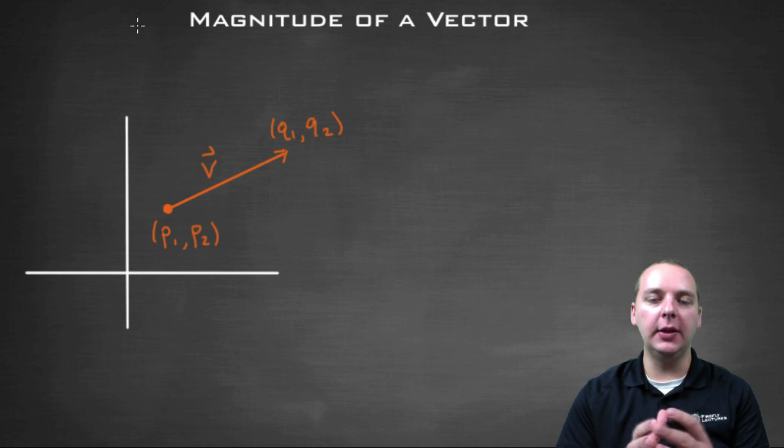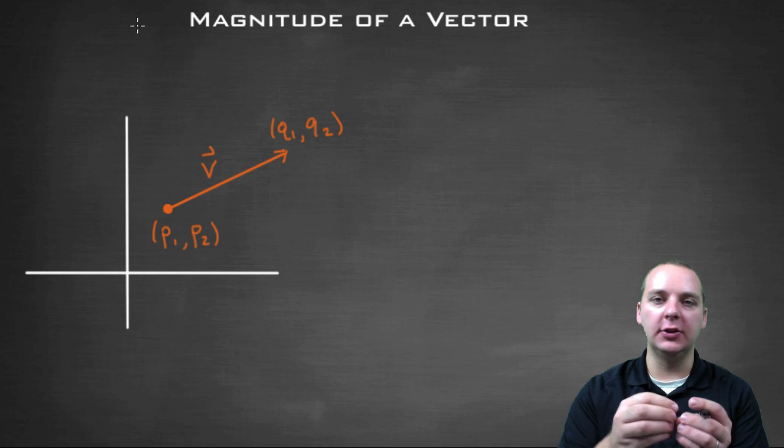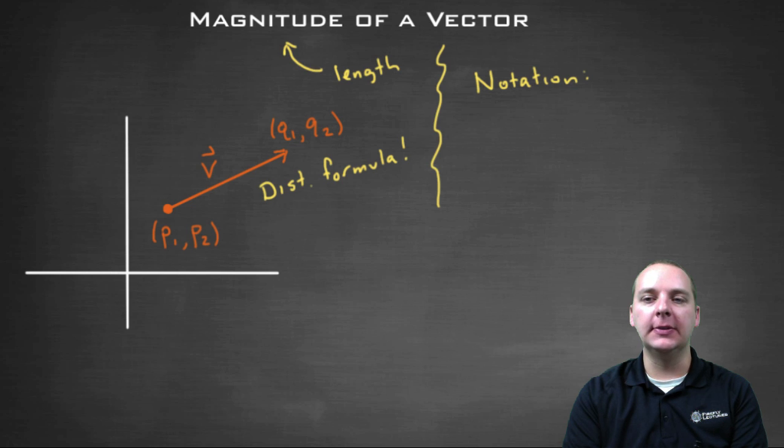One thing we have to do very frequently when dealing with vectors is compute the magnitude of the vector. Magnitude is basically the length of the vector, just how long the vector is. So let's talk about how we would do this.